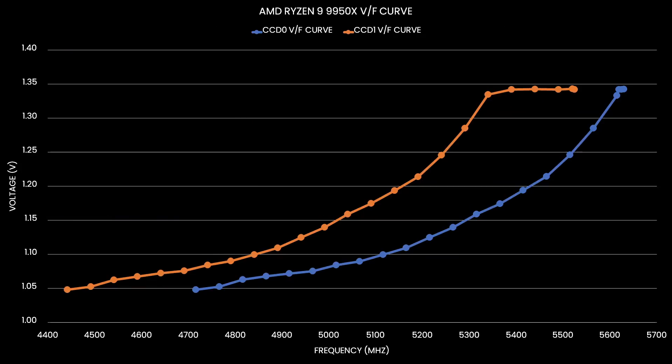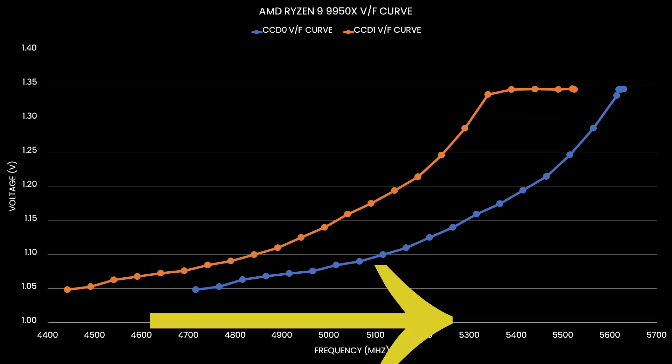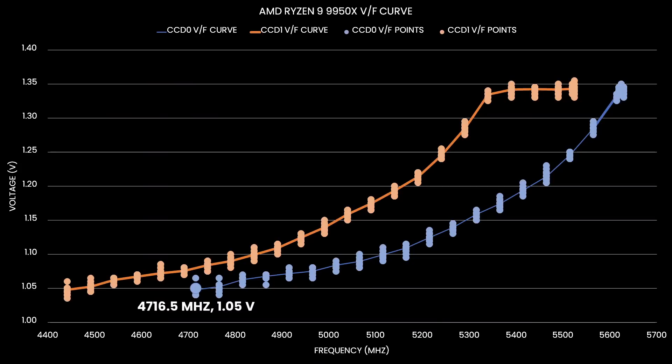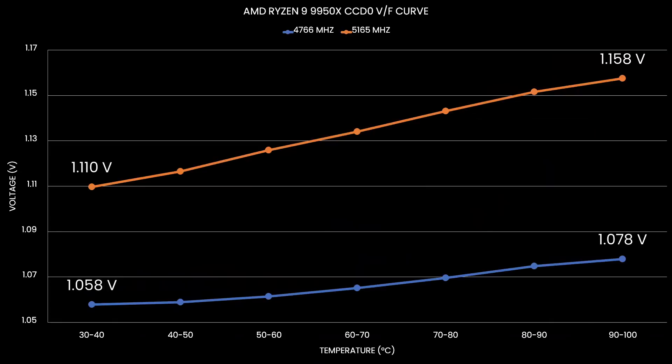We can immediately make a simple observation: the higher the frequency, the more voltage is required. For example, for CCD0, we only need 1.05V for a frequency of about 4.7 GHz. However, we need 1.35V for a frequency over 5.6 GHz. There's another fundamental rule governing the VF curve: the higher the temperature, the more voltage is required.